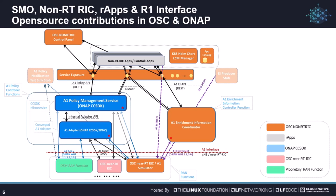Many services already available in ONAP can be exposed to R-Apps as a starting point, while standardized R1 services are being defined and standardized in the ORAN Alliance. We are currently extending the A1 enrichment information coordinator to act as a generic information coordination function for R-Apps to access data from the SMO, including information about RAN state, as an initial starting point while an R1 data coordination function is being defined. We have also demonstrated an early R-App catalogue and a visual control panel and various simulators and test stubs, available in OSC.